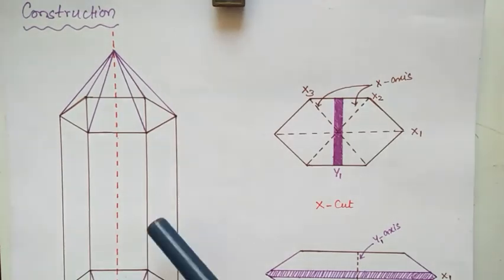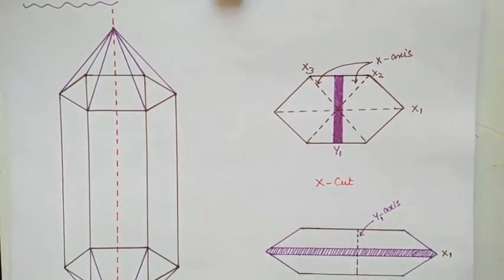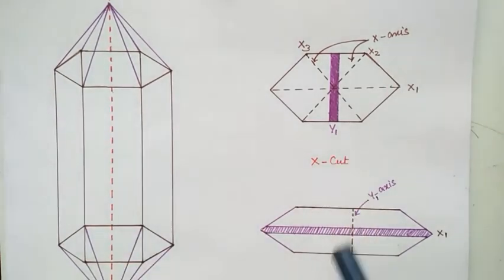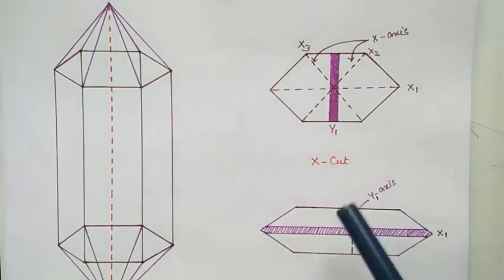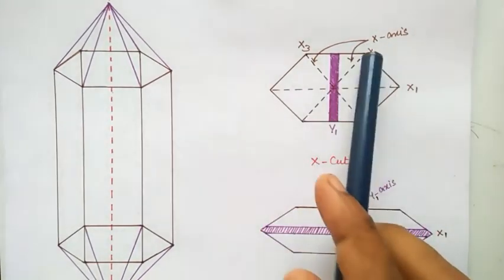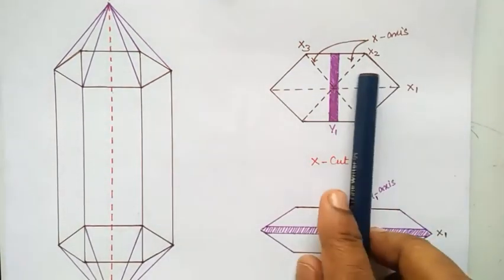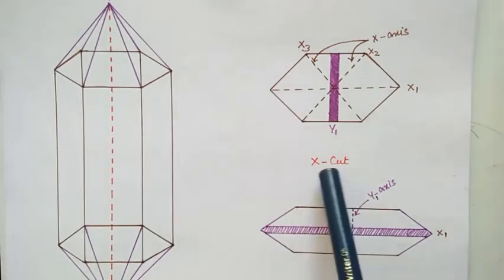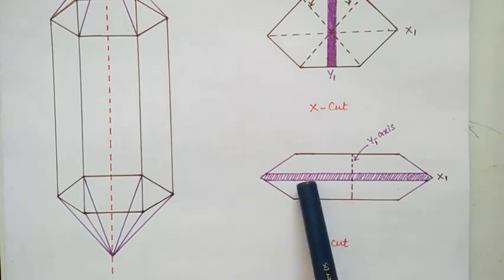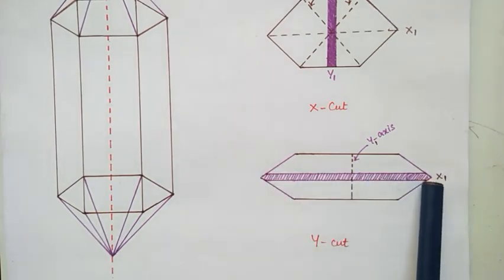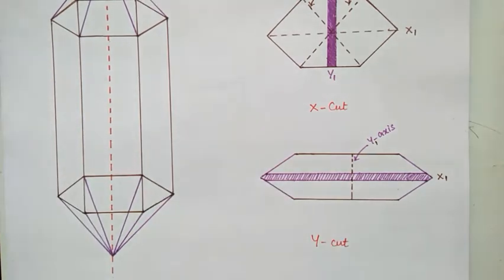Now we see the construction of the crystal. Its natural shape is hexagonal — it looks like a hexagonal prism. Before using the crystal it has to be cut in either X-cut or Y-cut manner. X-cut means the flat surfaces are perpendicular to its electrical axis (X1, X2, X3). Y-cut means the flat surfaces are perpendicular to its mechanical axis, which is the Y axis or vertical axis.